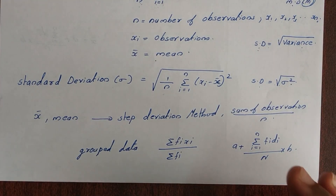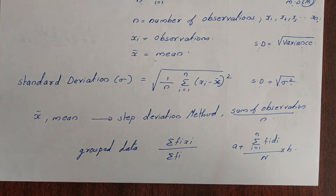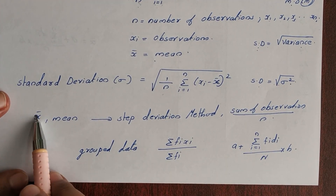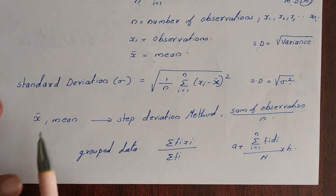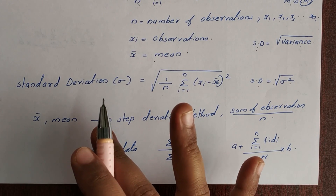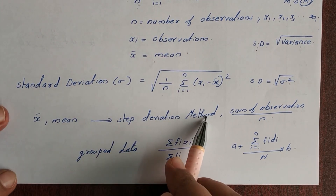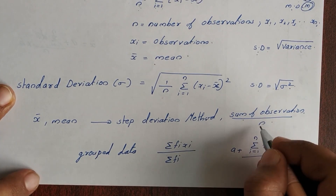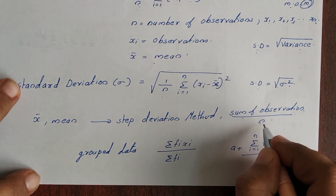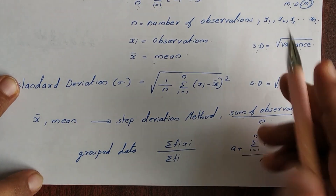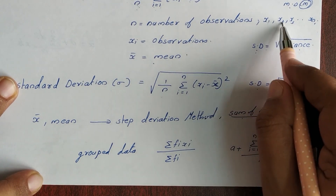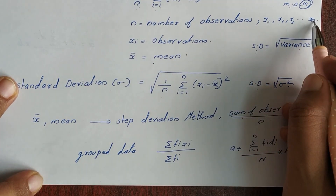The mean x bar is to be used. The mean is calculated using the sum of observations divided by n. For ungrouped data, the observations are x1, x2, x3, up to xn. We can also use the step deviation method to find the mean.